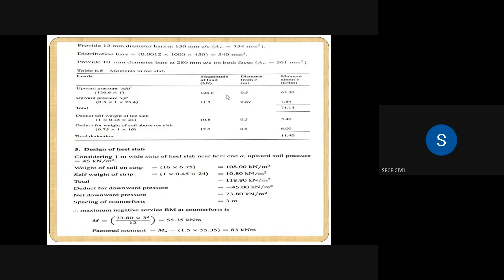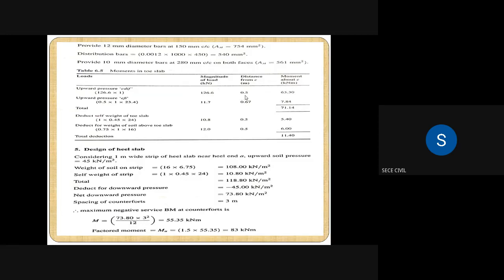The distance from point C — the junction of the toe slab and stem — to the center of the toe slab is one divided by two, since the toe slab is one meter wide. So the load of 126.6 kN acts at the center of the toe slab. The distance from the center of gravity to point C is 0.5 m. Therefore the moment about point C is 126.6 into 0.5, giving 63.3 kNm.